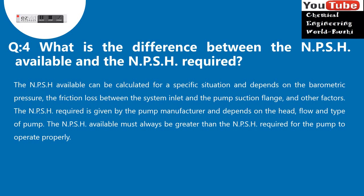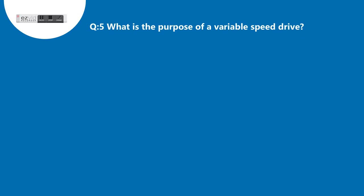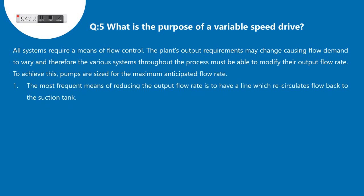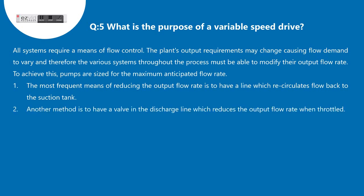Question 5: What is the purpose of a variable speed drive? All systems require a means of flow control. The plant's output requirements may change, causing flow demand to vary, and therefore the various systems throughout the process must be able to modify their output flow rate. To achieve this, pumps are sized for the maximum anticipated flow rate. The most frequent means of reducing the output flow rate is to have a line which recirculates flow back to the suction tank.